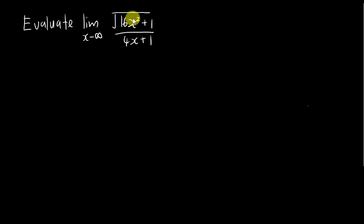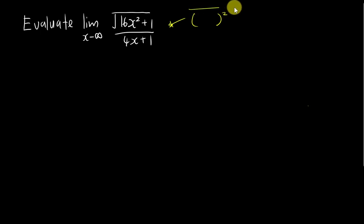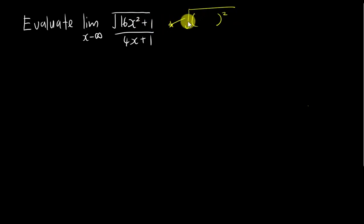The problem is you have a square root here, and normally when I see this kind of question, the first thing that comes to mind is making it into something like bracket squared, then square root and bracket squared cancel out. But sadly, this is not possible, so I will just ignore this method.